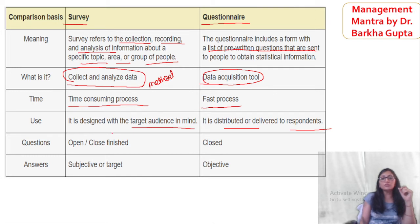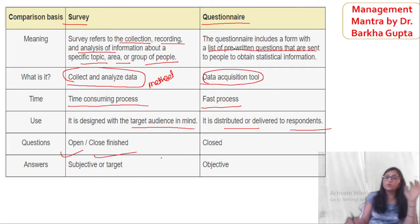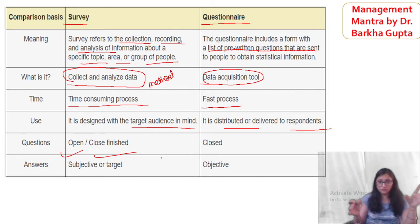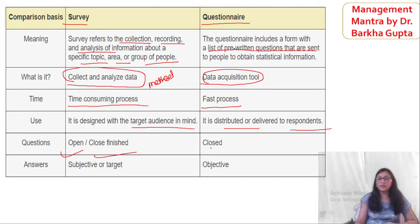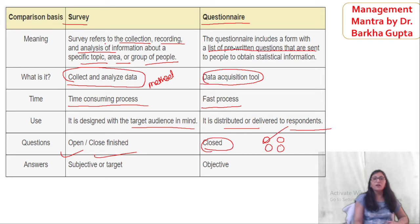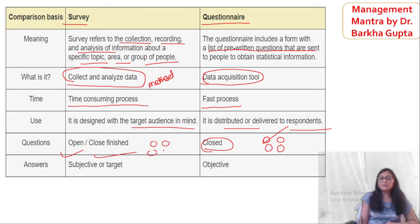In the survey, the questions are mostly both open-ended and close-ended. But in the case of the questionnaire, most of the questions are closed. Closed means there are options — you can only choose one answer.